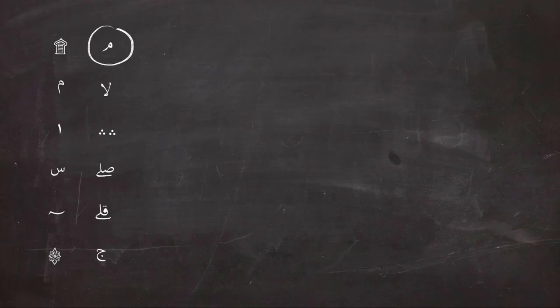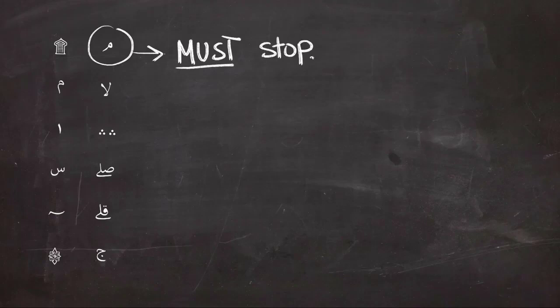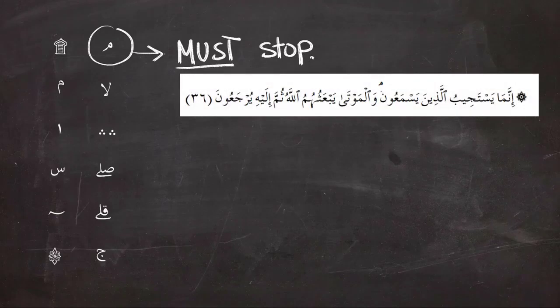We're going to start with the first one, and it's a symbol that looks like meem and it means you must stop while reading. Otherwise, the meaning of the ayah or the verse will change. So in this example, you should stop at the symbol. We have to stop at the symbol of meem.